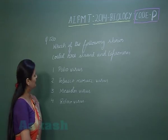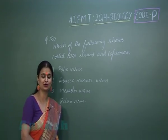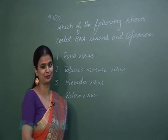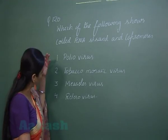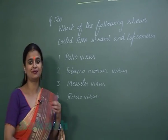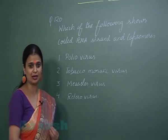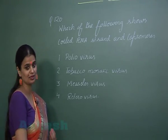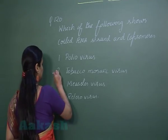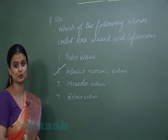In question 120 we have to look for an option in which there is presence of coiled RNA and capsomeres. All the viruses given here have RNA as genetic material, but the coiled RNA is only present in tobacco mosaic virus, that is TMV. So TMV represents the right option for question 120.